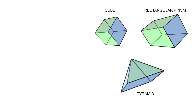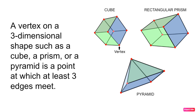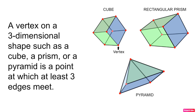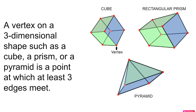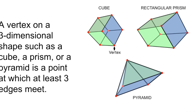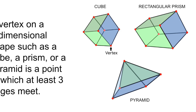Another word we want to think about is how we describe the corners, or the vertices. A vertex on a three-dimensional shape is where at least three faces meet together, to make what we normally would call a corner. But mathematically, we will call them a vertex, or vertices.